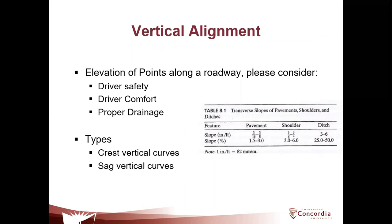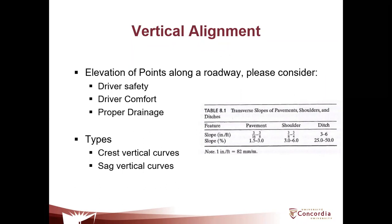There are two types of curves: the crest and the sag. A crest curve is when you are going uphill, you reach the top — the crest — and then you start going downhill. A sag is the contrary: you go downhill, reach the lowest point on your alignment, and then start going up.